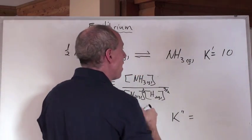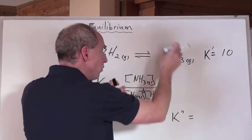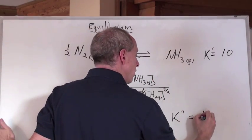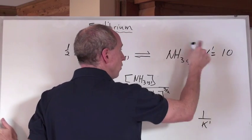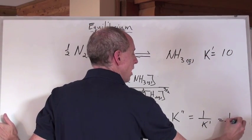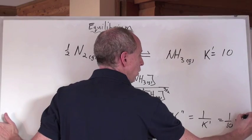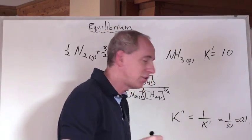And so that new K value here, if that reaction were to be reversed, you go one over that K value, one over this number right here, and one over ten is the answer, which is point one, right? So, here's the deal.